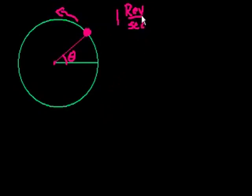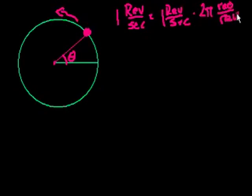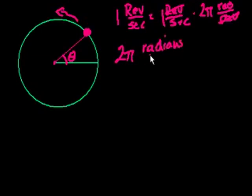Well, how many radians are there in a revolution? There's 2π radians in a revolution, right? One go around in a circle is 2π radians. So this equals 1 rev per second times 2π radians per revolution. And then the revolutions will cancel out, and you have 1 times 2π, so you have 2π radians per second.